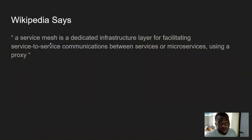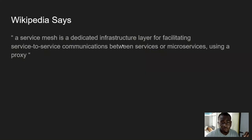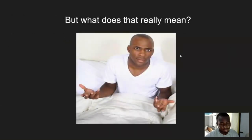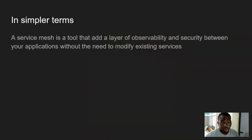When you Google this you probably land on Wikipedia, and Wikipedia will tell you a service mesh is a dedicated infrastructure layer for facilitating service-to-service communications between microservices using a proxy. But when I first started out, that didn't tell me much. A simpler definition would be: a service mesh is a tool for adding a layer of observability and security between your applications without the need to modify your existing services.